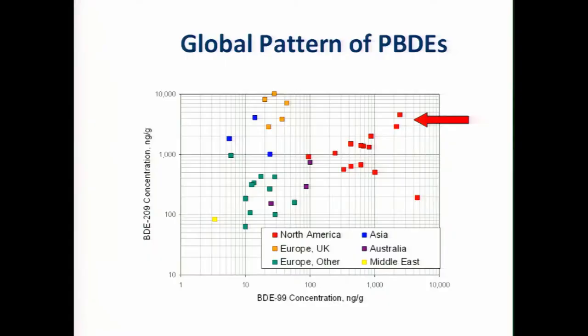Then in the red over here is North America. In general, North America has more BDE-209, which is the PBDE that's used in the Penta mixture. But there's also quite a bit of 209 found in a lot of North American homes. The relevant point really here is the big arrow, which is where our study is. That's the whole world there, and then this is California.